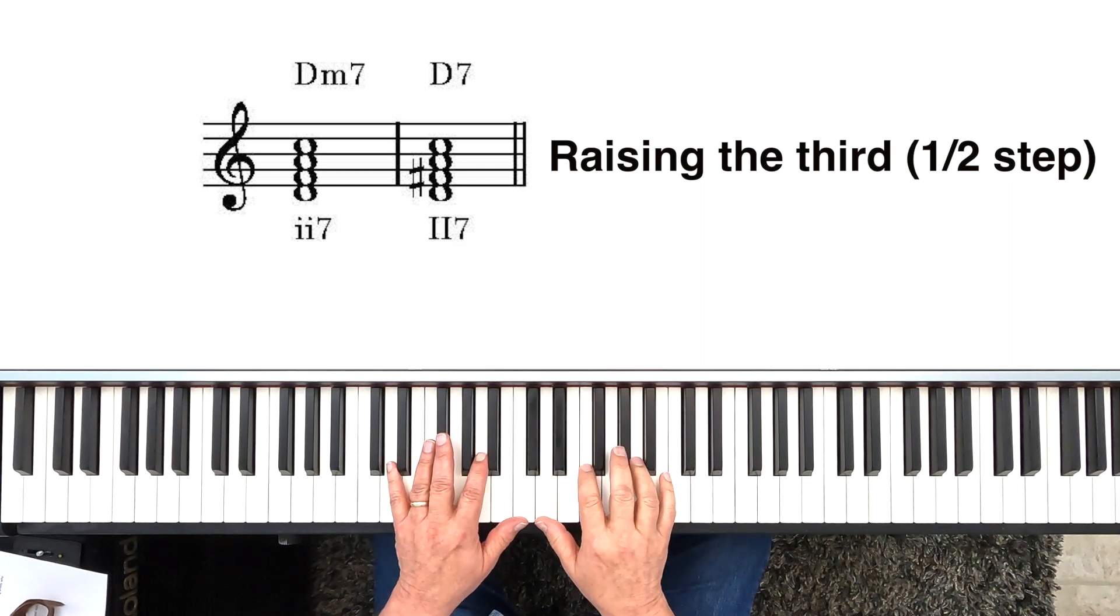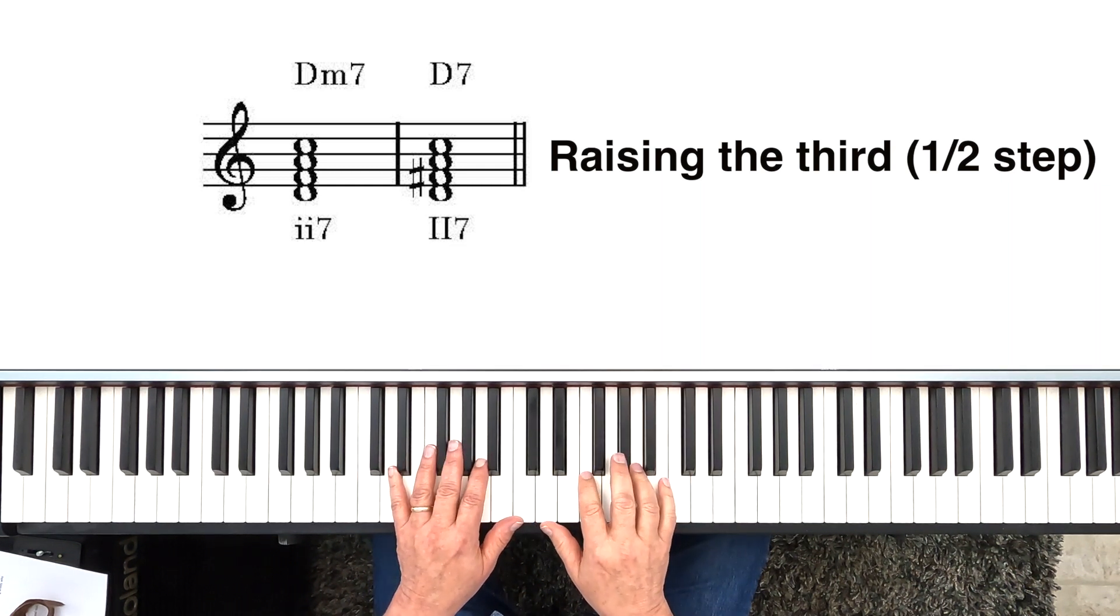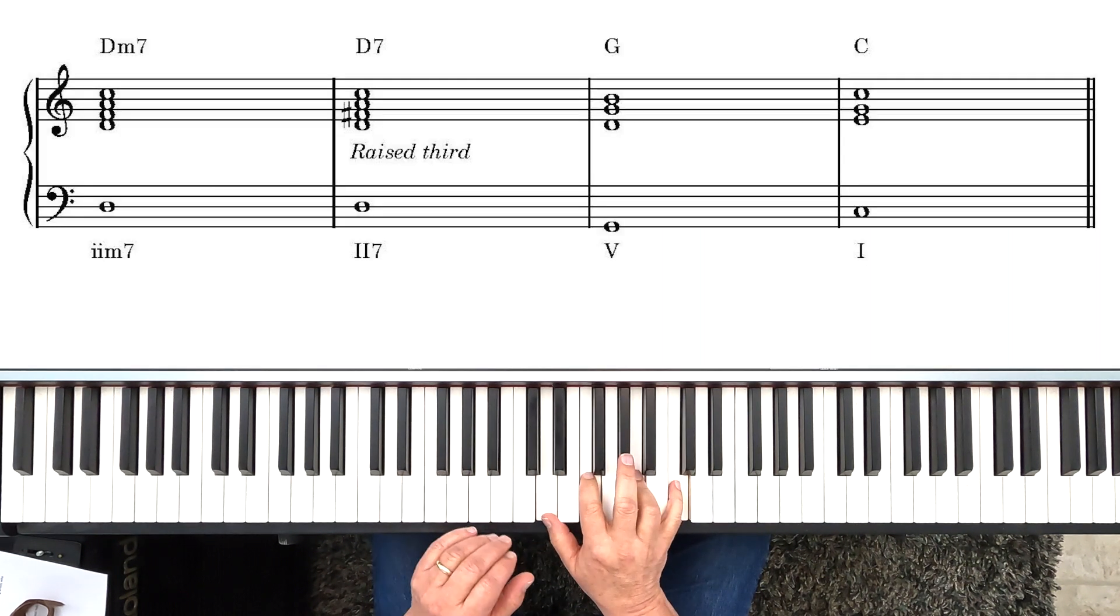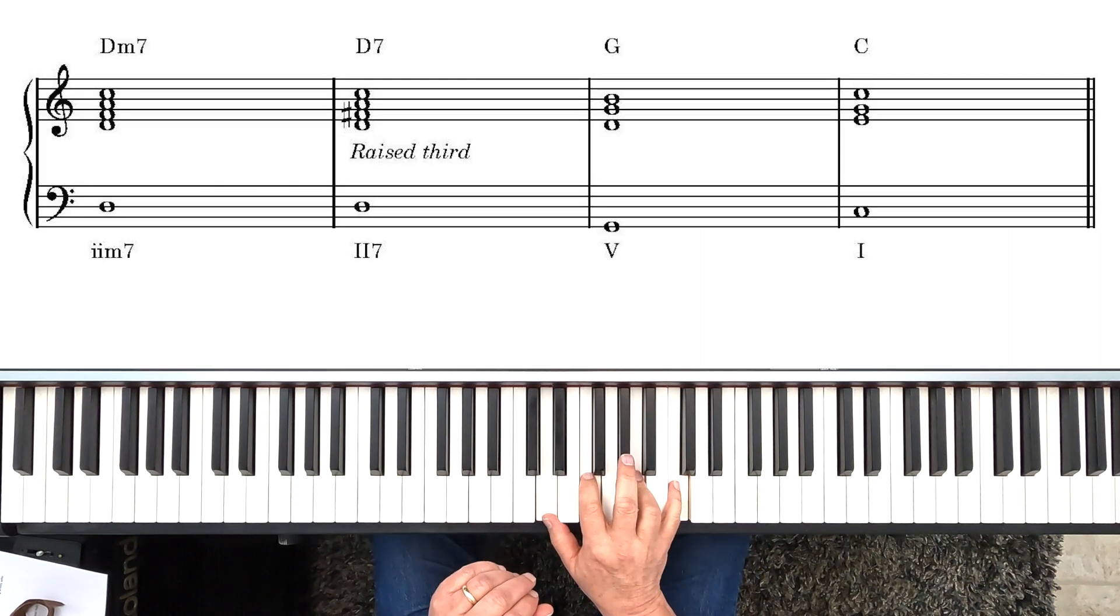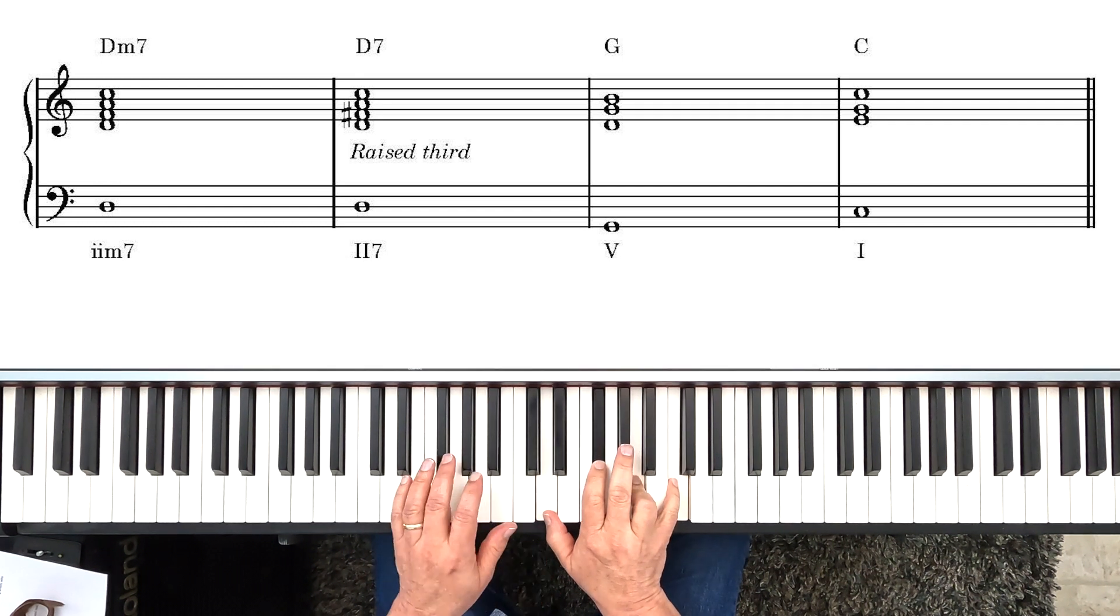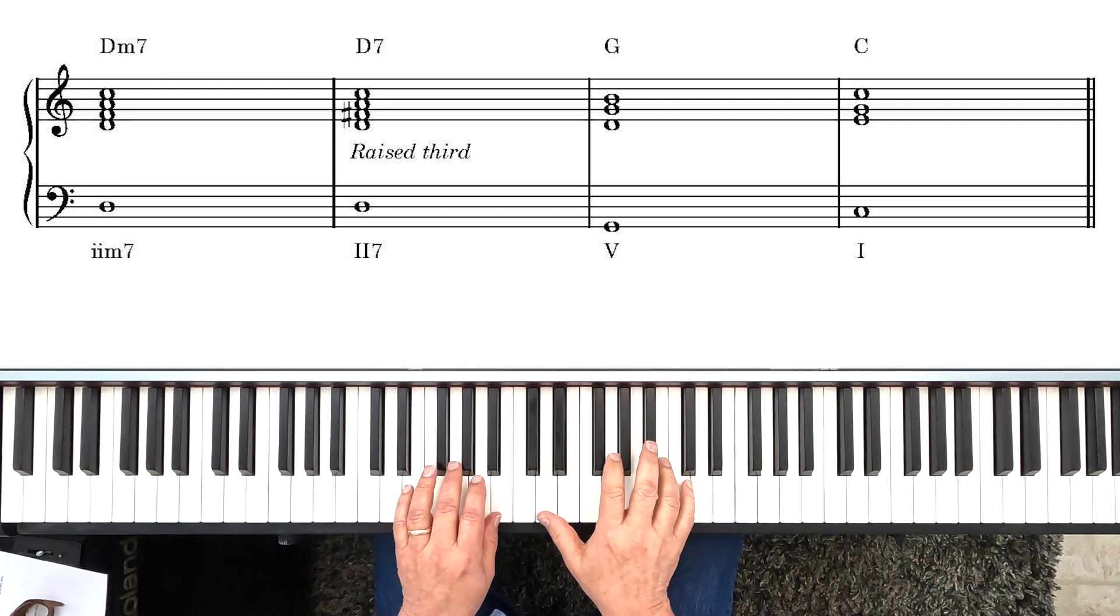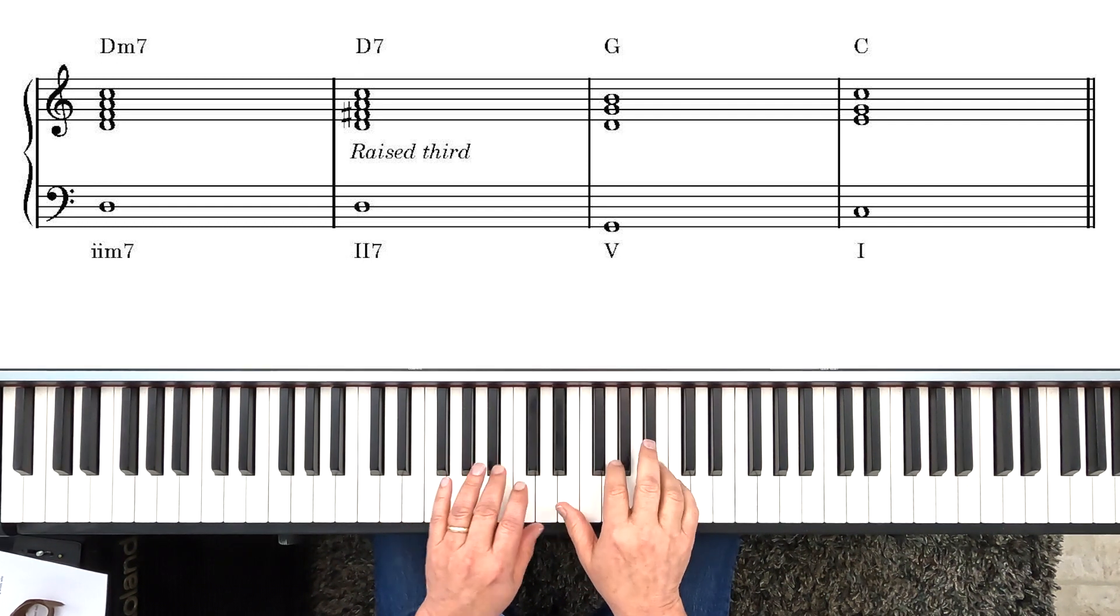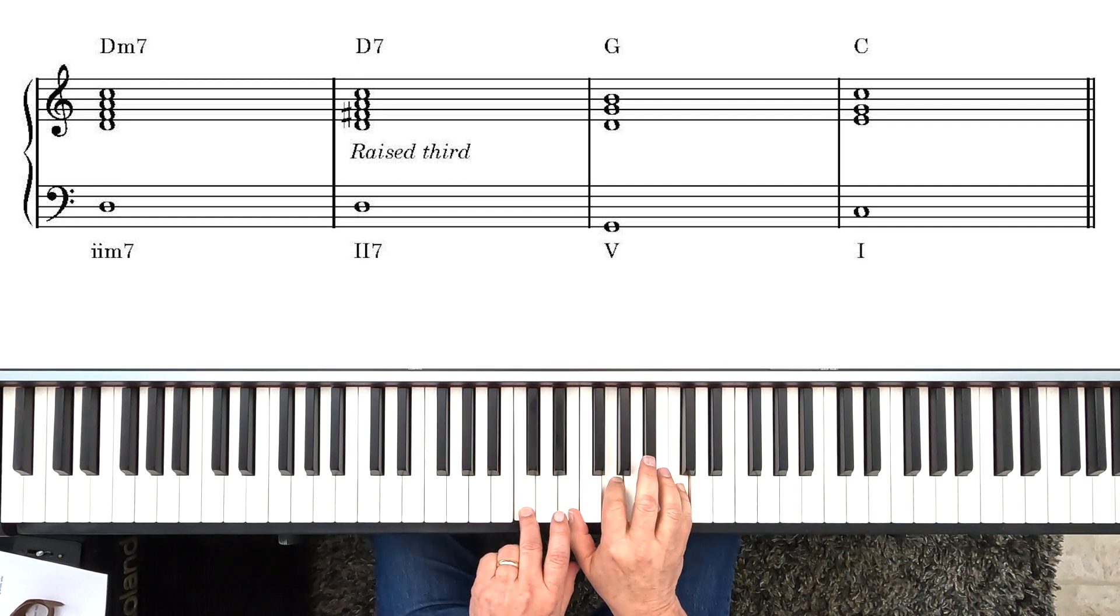And so if you're playing a chord progression, say for example in the key of C, this would be the II7, and now it's the 2 dominant 7th, and that drives you to the 5 in the key of C, which then in turn drives you back to the I.